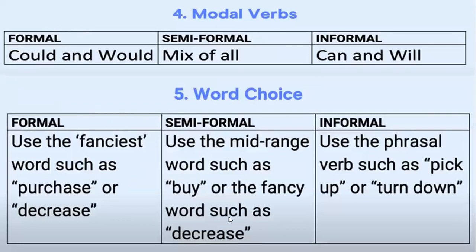The fourth rule is modal verbs. Formally, use 'could' and 'would.' Informally, use 'can' and 'will.' The fifth rule is word choice. Use the fanciest words in formal writing, such as 'purchase' or 'decrease.' In informal writing, use phrasal verbs such as 'pick up.'